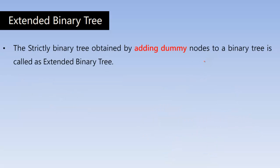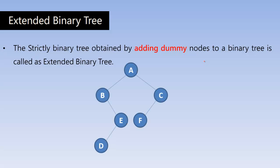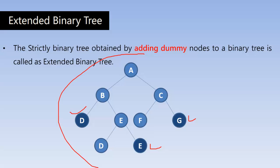Now the extended binary tree. A strictly binary tree obtained by adding dummy nodes to a binary tree is called an extended binary tree. If you do not have a strictly binary tree, you can make any tree a strictly binary tree by adding some dummy nodes. So here, this is a simple binary tree that is not strictly binary, but you can add dummy nodes like D, E, and G to make it strictly binary. When dummy nodes are added, this is called an extended binary tree.